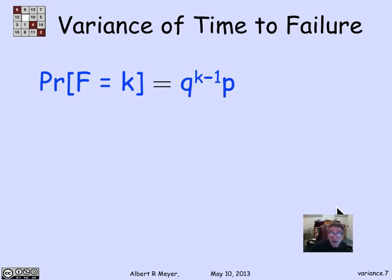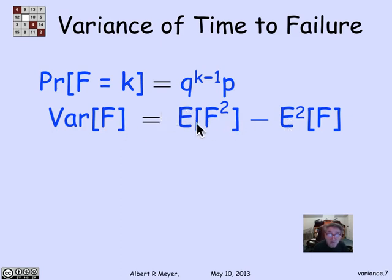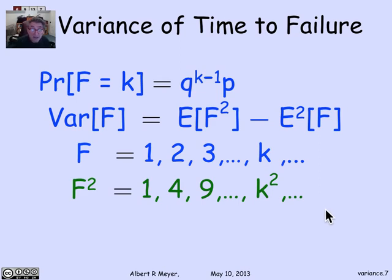One way is to plug in the definition of expectation. The probability that it takes k hours to fail follows the geometric distribution: q^(k-1) times p. The variance of F, using the formula E[F²] minus (E[F])², becomes E[F²] minus 1/p². F squared takes values 1, 4, 9, k² — so the expectation of F² is the sum from k=1 to infinity of k² times the probability that F equals k.